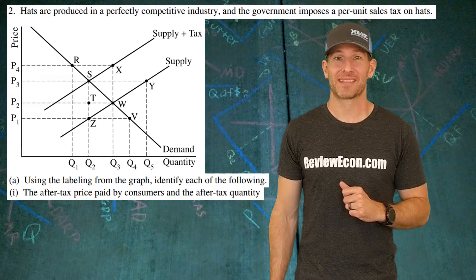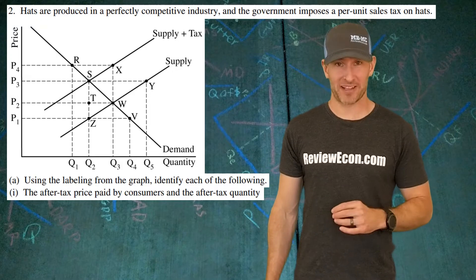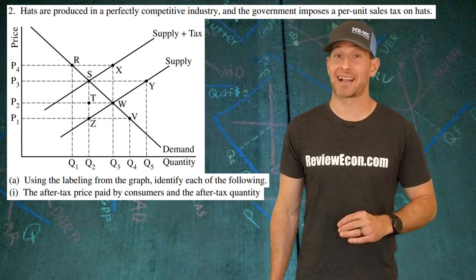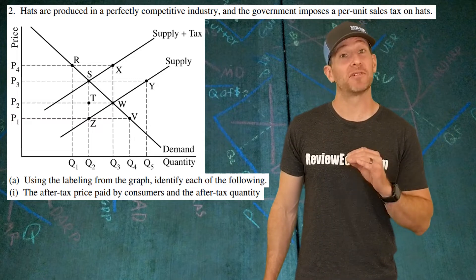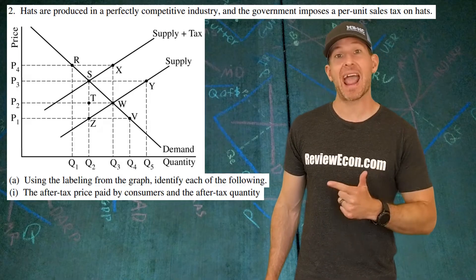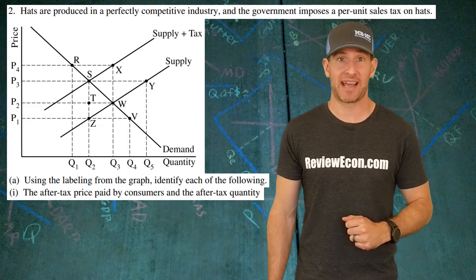This question starts off with a perfectly competitive market for hats, and the government has imposed a per unit tax on those hats. We have to identify the price that consumers will pay as a result of the tax and the quantity of hats that will be sold as a result of the tax.